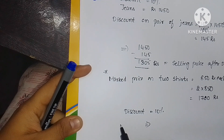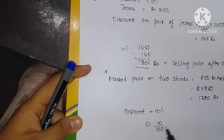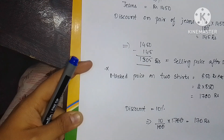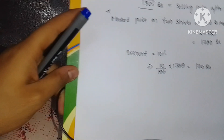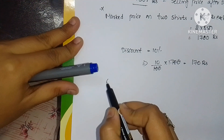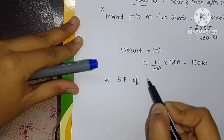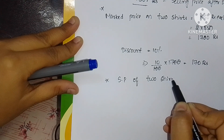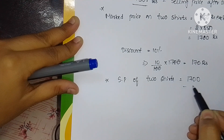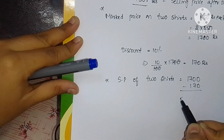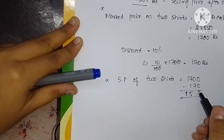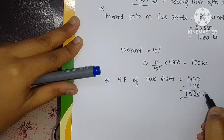The discount is the same 10%, so 10 by 100 into 1700 — two zeros cancel — giving rupees 170 as the discount. So the selling price of the two shirts is 1700 minus 170, which equals rupees 1530.